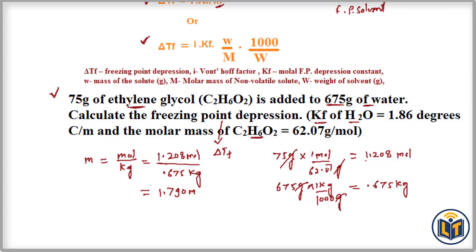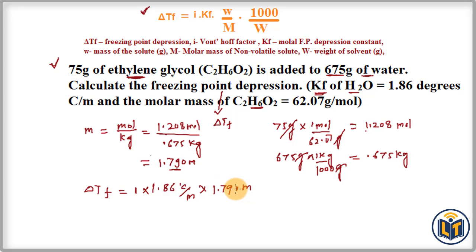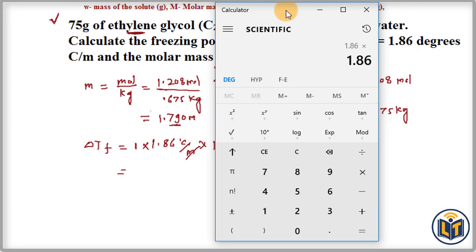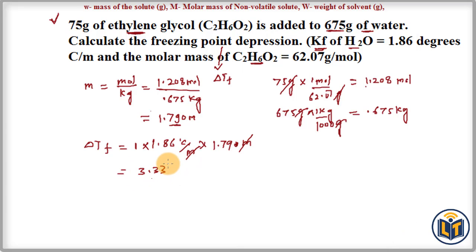Now applying the first formula: ΔTf = i × Kf × m. The i value for a non-volatile solute is 1, since it has very low tendency to dissociate. So ΔTf = 1 × 1.86 °C/m × 1.790 m. The units of molality cancel out, leaving degrees Celsius. Calculating: 1.86 × 1.790 = 3.33°C. So the freezing point depression is 3.33°C.